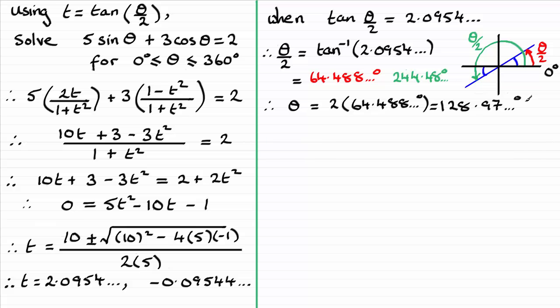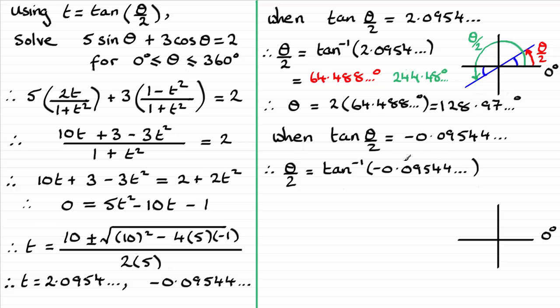Okay, so we need to work now with this value of t. So t being tan theta upon 2, we've therefore got the case when tan theta upon 2 equals minus 0.09544 and so on. So again just take the inverse tan of both sides and we end up with this result. And to work out what theta upon 2 could be for this one, I'm just going to turn to my quadrant diagram again.